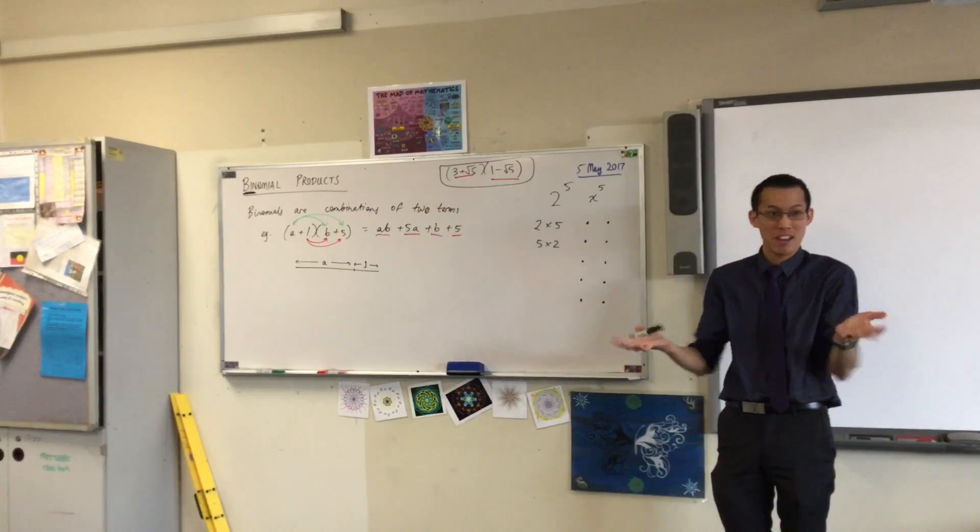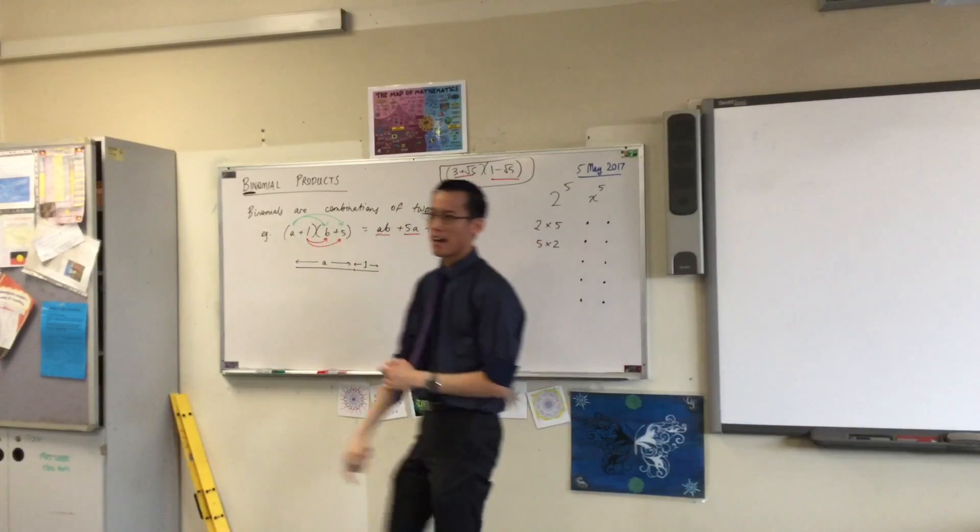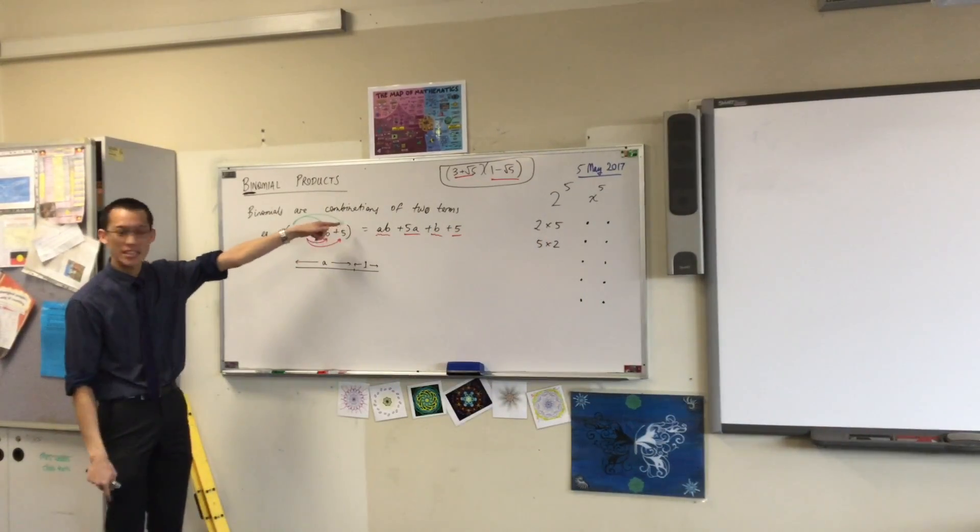A plus 1. Right? Like you just added them. Does that make sense? Now, A plus 1 is one ingredient. B plus 5 is the other.